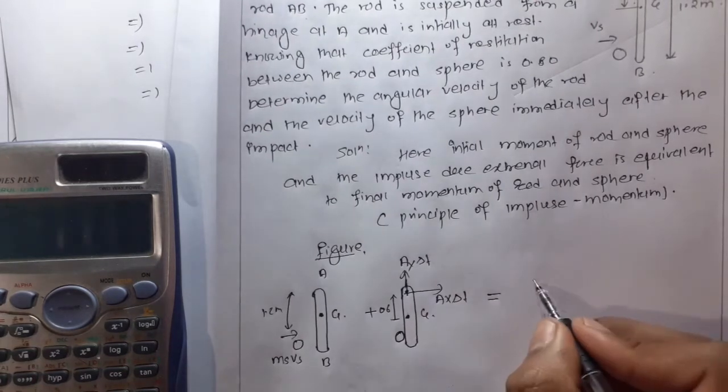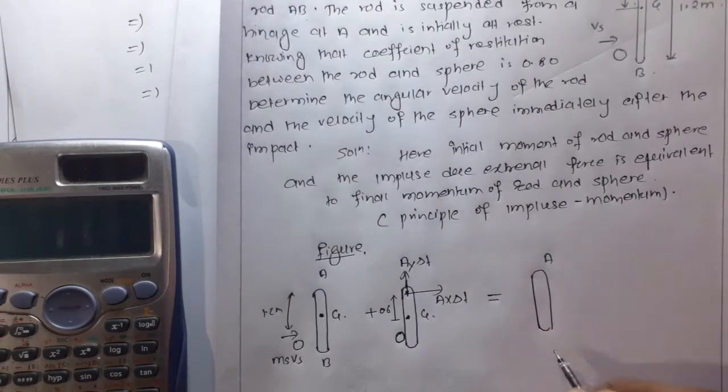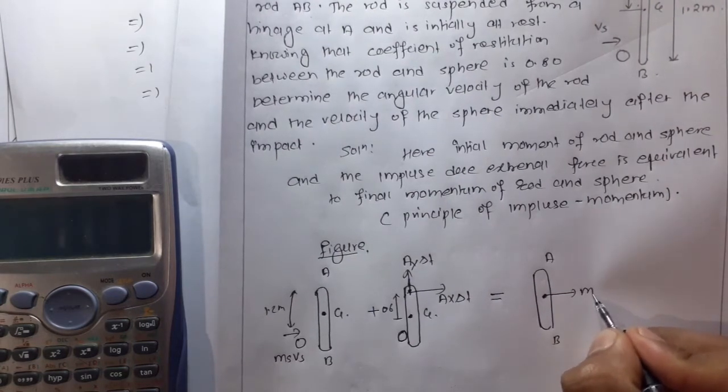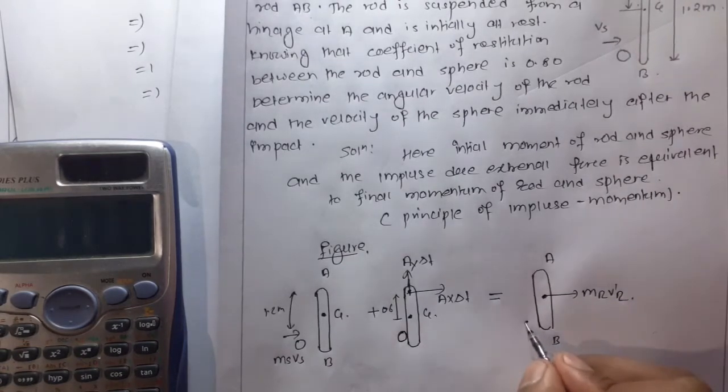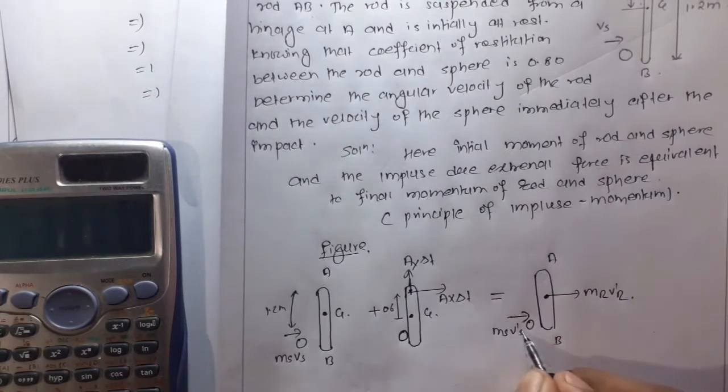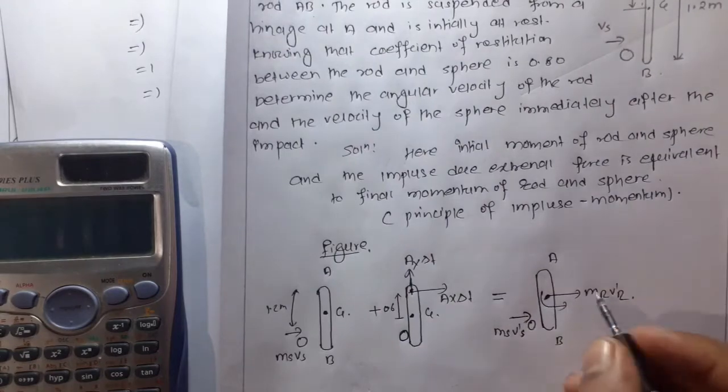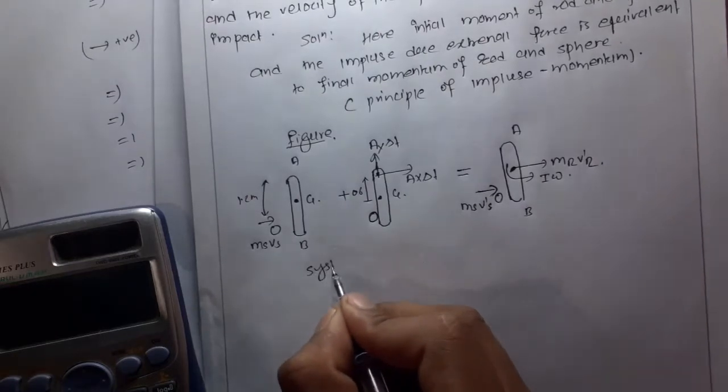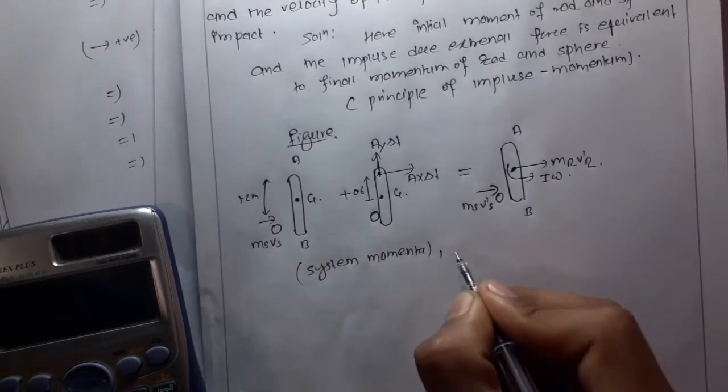The sphere has velocity v'_s after impact, and the rod has angular velocity omega. For the system, initial momentum plus external force impulse is equal to system momentum after impact.